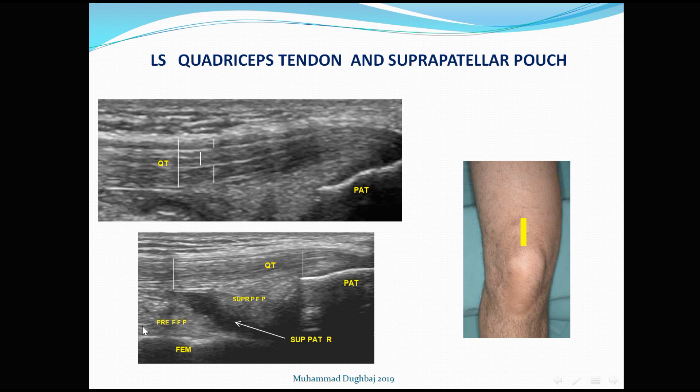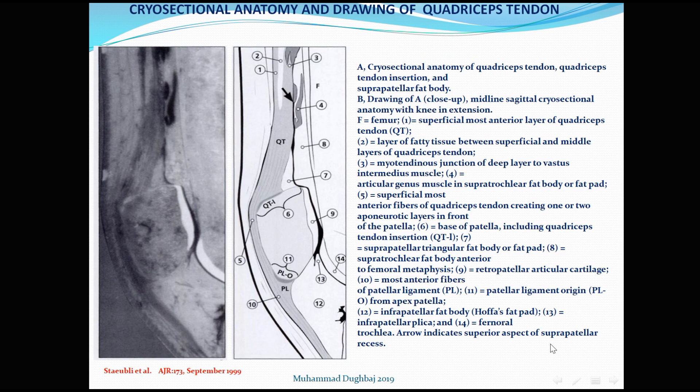We can see here that the suprapatellar fat pad shows no encroachment during extension over the patella or the bony cortex of the femur. This is the anatomical cross-sectional anatomy showing the quadriceps tendon, pre-femoral fat pad, suprapatellar fat pad, suprapatellar bursa, articularis genus muscle, and the extensor mechanism including the quadriceps tendon and patellar tendon.